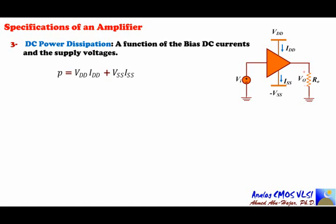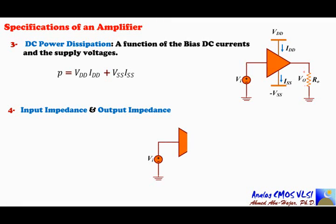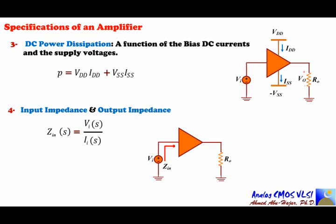The next important specification is the input impedance Zin. Looking into the amplifier, there is an impedance that controls the current going into the amplifier. Zin as a function of S equals Vi(s) over Ii(s) — the input voltage over the input current. It can be easily calculated and also easily measured in the lab.